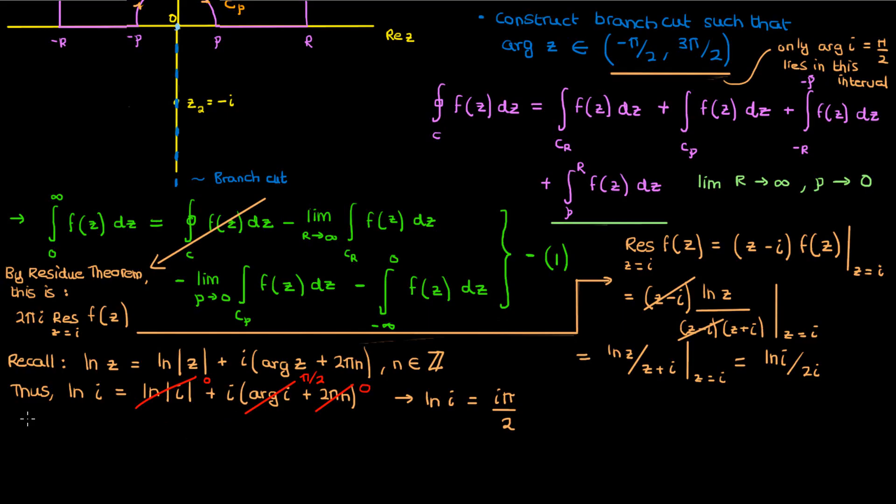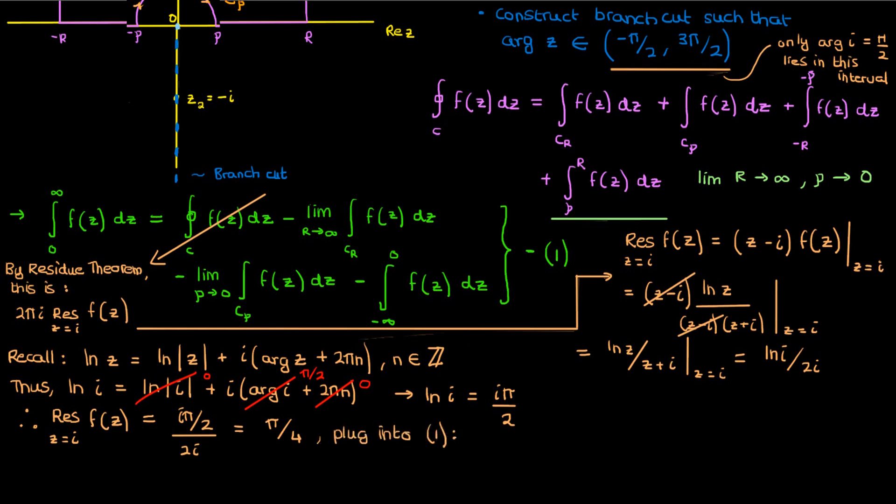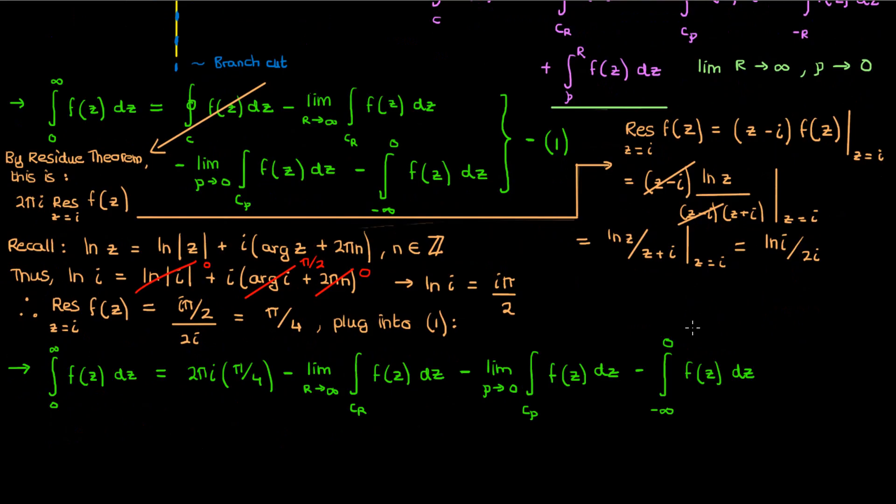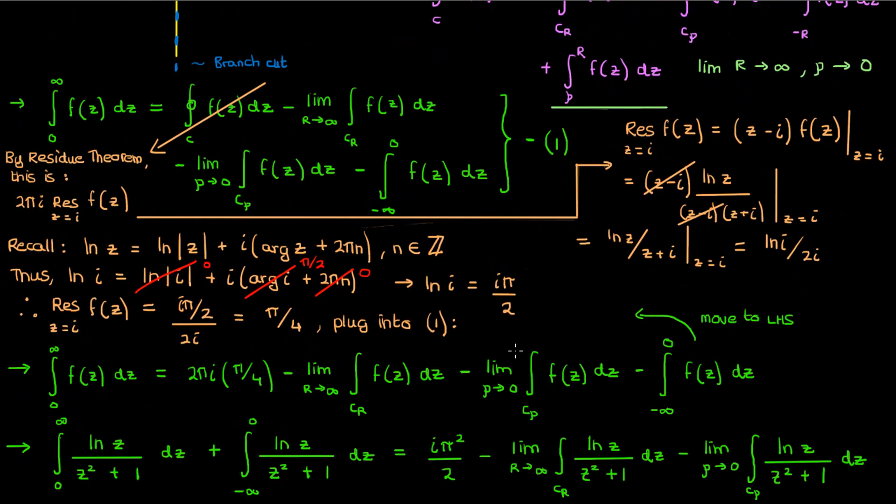Anyway, once I substitute this ln i into my expression for the residue, I end up with a residue of pi by 4 at z equals i for the function f. Plugging this into equation 1 gets me the following expression for my integral. Now I can make further simplifications to all of this if I move this last integral from negative r to negative rho to the left-hand side, and if I write out the function f in all of my integrals.